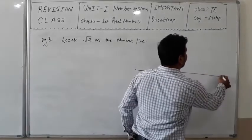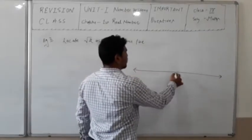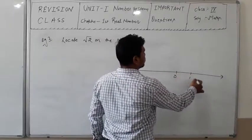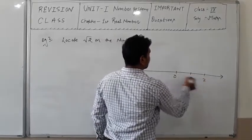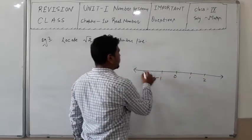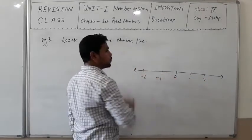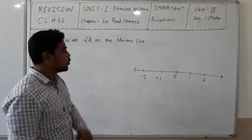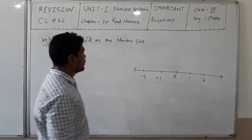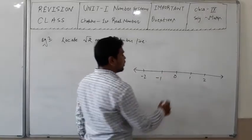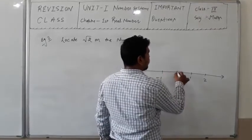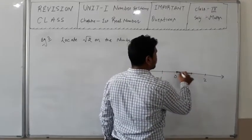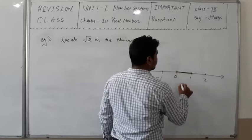First, I draw a number line with 0, 1, 2, -1, -2 marked. We are representing √2 on the number line. From 0 to 1, that is 1 unit distance. We consider triangle AOB where OA is 1 unit and AB is 1 unit.